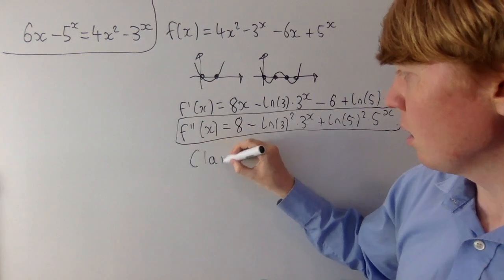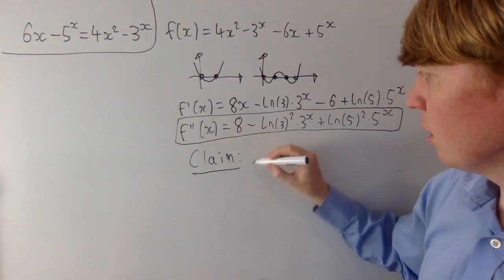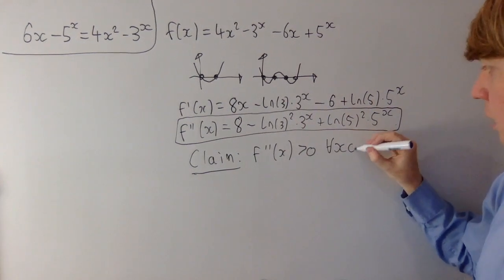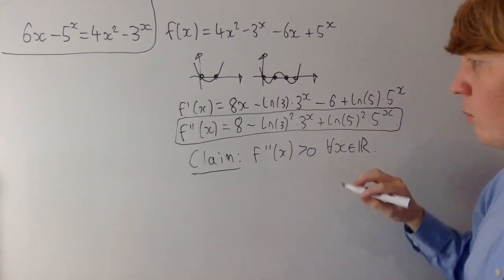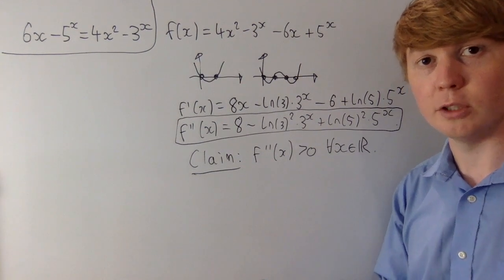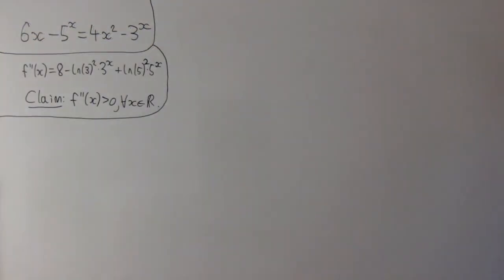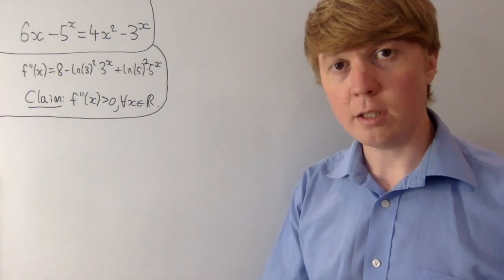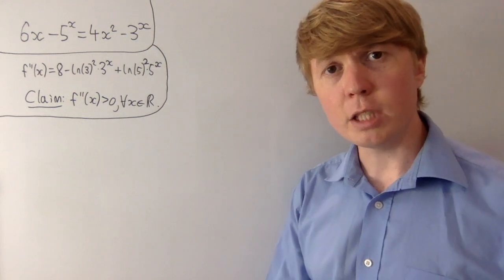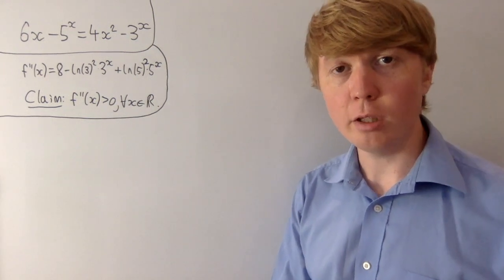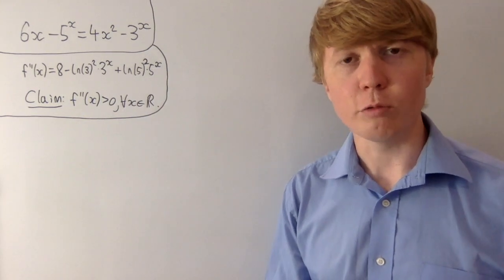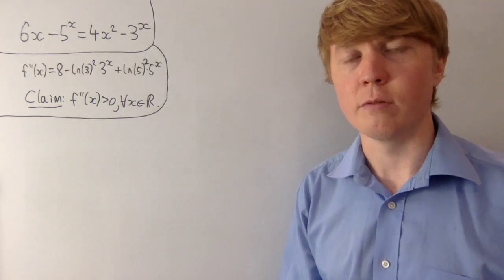So we'll introduce this as a claim that we'll prove later: the second derivative of our function is greater than 0 for all values of x. Before we prove this, let's look at why it's useful. Given that the second derivative is always positive, this restricts the number of turning points our function can have. And if we restrict the number of turning points, this will also restrict the number of roots — or zeros — of our function.